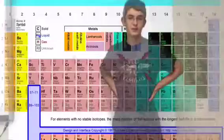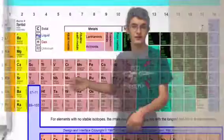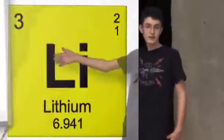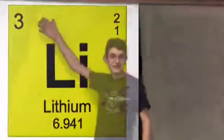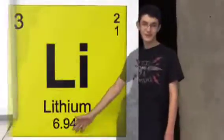Each box on the table represents a different element. Each box gives information on the element's name, atomic number, which is the number of protons, symbol, and atomic weight.